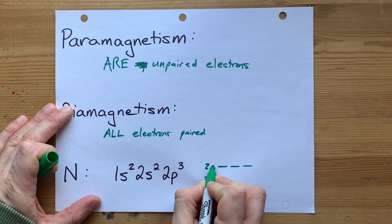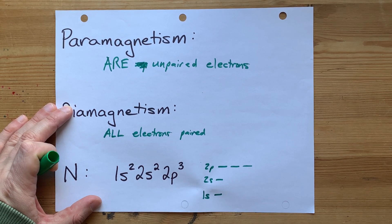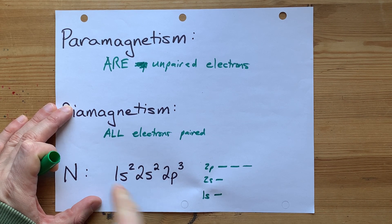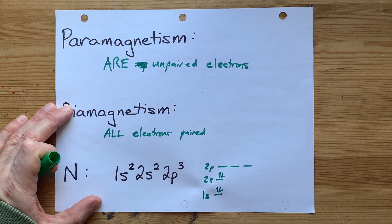There are three 2p orbitals. There's always three orbitals when you're talking about the p subshell. There are two electrons in the 1s, that's 1s². Two electrons in the 2s, that's 2s².